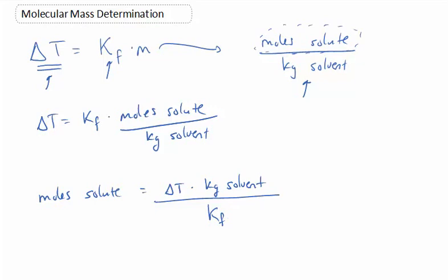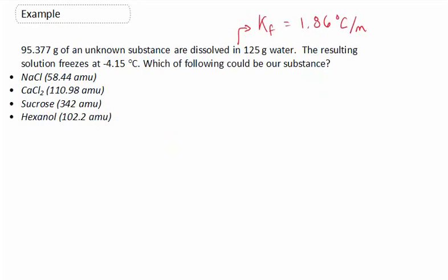So let's put that to use in an example problem and see how we can find a molecular mass. Okay, so here's the typical problem you're going to see, where you might put in some known amount that you measure out, 95.377 grams in this case, are going to be dissolved into 125 grams of water.